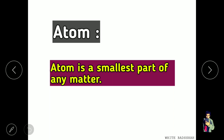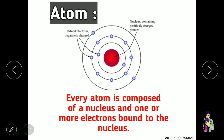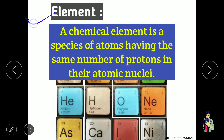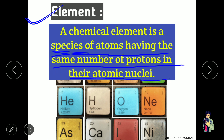Let's discuss some terminology related to chemistry. First of all, what is an atom? An atom is the smallest part of any matter. An atom gives you information about the arrangement of electrons and the nucleus. The nucleus is made of protons and neutrons. Now, what is an element? An element is a species of atoms having the same number of protons in their atomic nucleus.